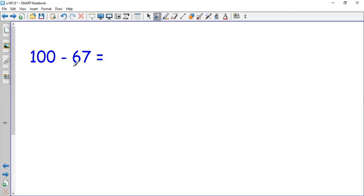Another example. 100 minus 67 equals what? I know that my answer is the number pair that makes 100. So I will look at the units. 7, how many more to make 10? I need 3. 60, how many more to make 90? I need 30. So the answer is 33.